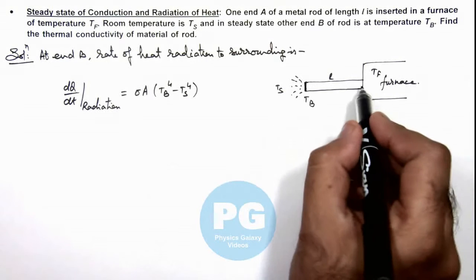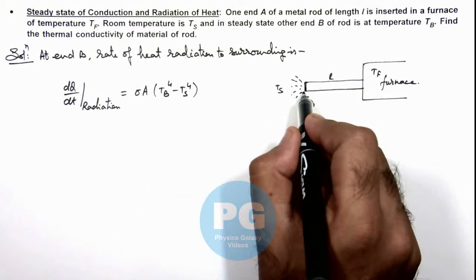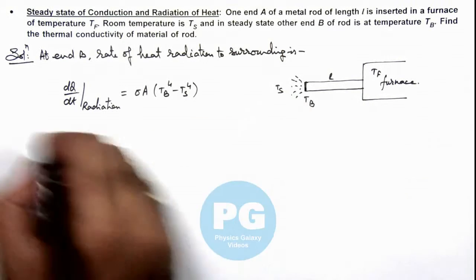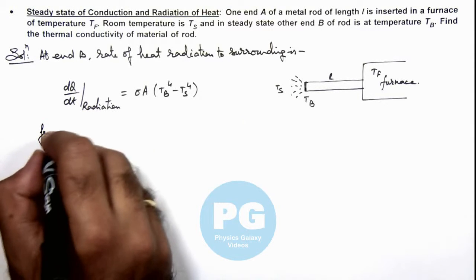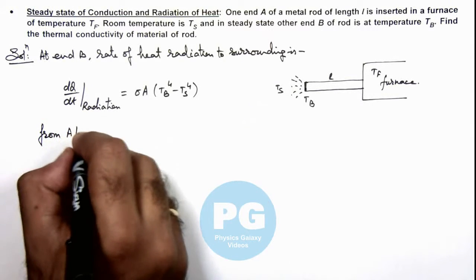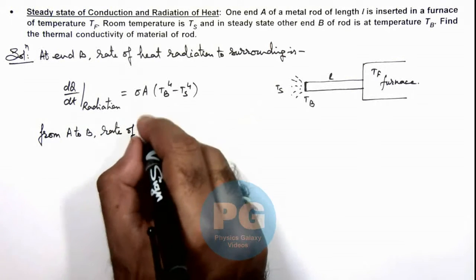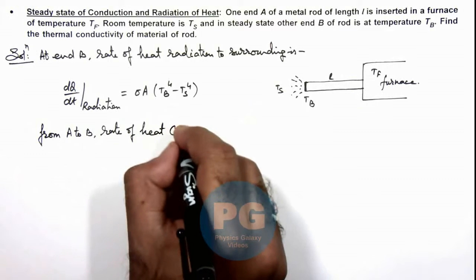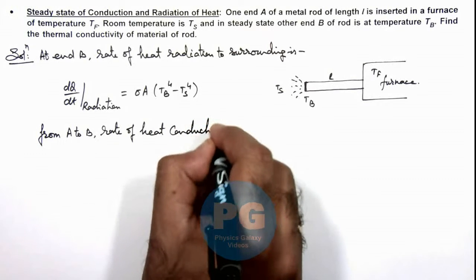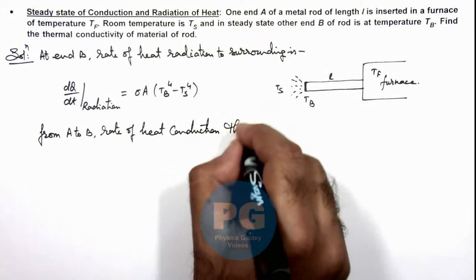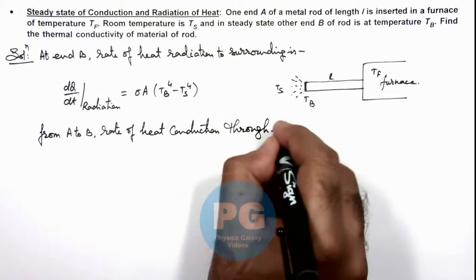Now, from furnace to end B of the rod, if we analyze, we can write from A to B, rate of heat conduction through rod is...